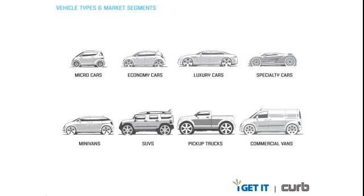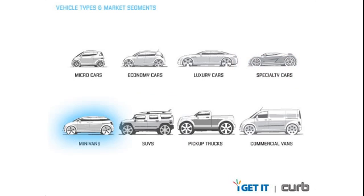At some point early in the process, the segment the concept will fit into should be chosen. This is because a legal requirement or functional requirement could drive the architecture and also change the proportions of the vehicle. The vehicle types or market segments are divided into roughly eight different categories. These include micro cars, economy cars, luxury cars, specialty cars, minivans, SUVs, pickup trucks, and commercial vans.